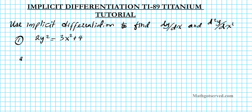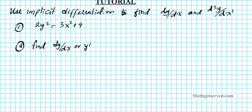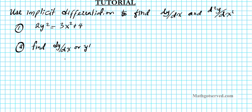For part A we want to find dy/dx, or y prime — they mean the same thing. I'm going to use y prime notation. Let's start with the original function: 2y² = 3x² + 4. To differentiate this implicitly, let's start with the first term.